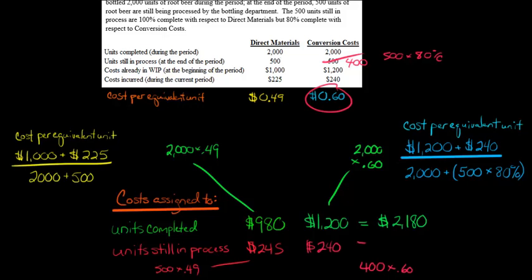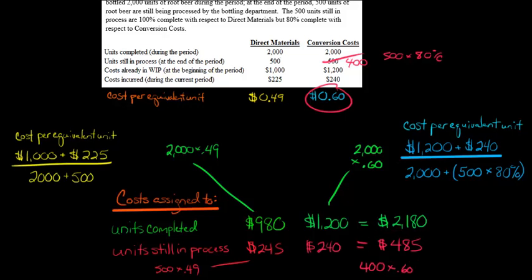Let's add this together to get the total — whether direct materials or conversion costs — assigned to units still in the bottling department that haven't been transferred to the next department because they're not completely finished yet. The cost assigned to them would be $485. And then the cost assigned to the bottles that were done with this department — moved on to the next department, or to finished goods inventory if this was the final department — the ones completed and transferred out, was $2,180.